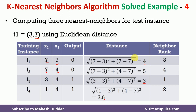Once we calculate the distances with respect to the new instance, we assign ranks to the training instances based on distance. The minimum distance is 3, so we assign rank 1 to the third instance i3. 3.6 is the second smallest, so i4 is assigned rank 2. i1 is assigned rank 3, and i2 is assigned rank 4.